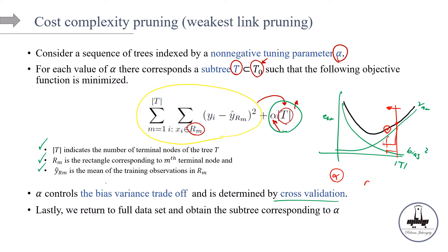So let's say the optimal tree has T(alpha) terminal nodes. If alpha is small, we are going to get a bushier tree. In the extreme case, if alpha is zero and we are not adding any stopping criteria, then the RSS is going to converge to zero and we get the bushiest tree. As we increase alpha, we are penalizing the complexity of the model, forcing the model to come up with smaller trees. By finding the optimal value for alpha, we get a better trade-off between bias and variance. This method is called the cost complexity pruning method.